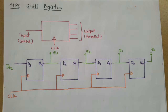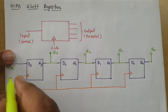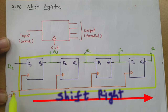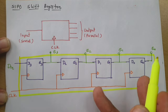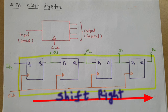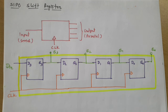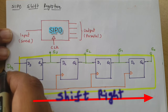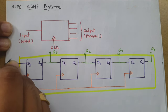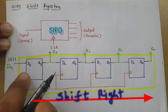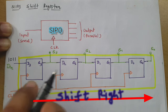Observing this circuit as a complete block, we have serial input, clock, and four parallel output terminals Q3, Q2, Q1, Q0 as per the block diagram. The functioning is identical to Serial Input Serial Output — if we insert data 1011, then with respect to the clock, this data gets shifted in one direction.